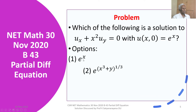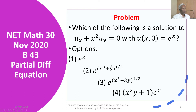The four options are: Option 1, e^x. Option 2, e^(x³ + y)^(1/3). Option 3, e^(x³ − 3y)^(1/3). Option 4, (x²y + 1)·e^x.